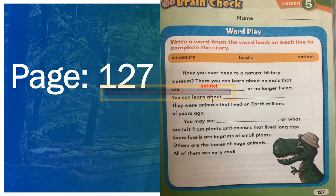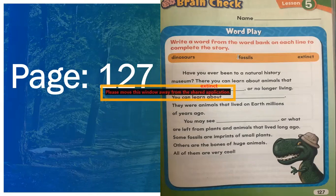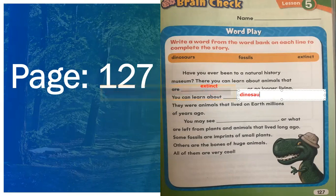Then next, you can learn about dash — they were animals that lived on Earth millions of years ago. Which animal lived millions of years ago? Is it the dinosaur or the fossils? It is a dinosaur. Write your answer: D-I-N-O-S-A-U-R-S. Dinosaurs.